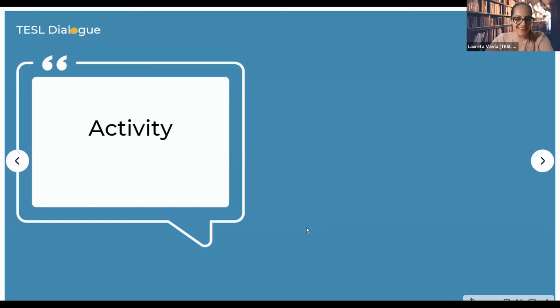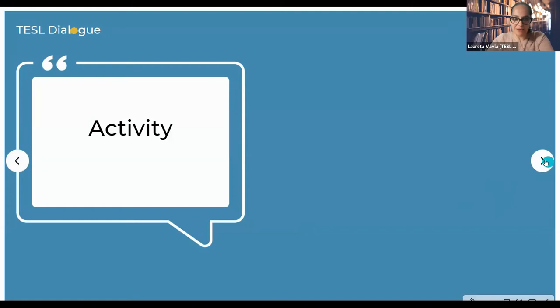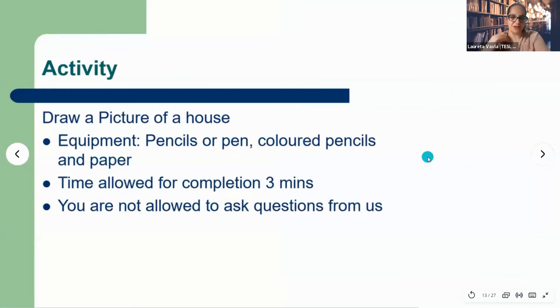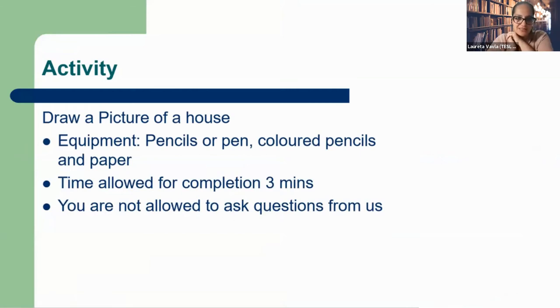Please have a pen or pencil and paper handy because we'll start with a fun activity right now. We'll talk about the importance of transparency. Here's the activity: you need to draw a picture of a house. You need a pen or pencil, colored pencils if you have them, and paper. Time allowed: three minutes. You are not allowed to ask us any questions. Start now.